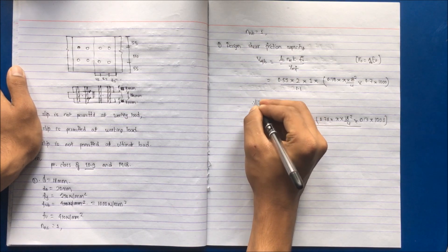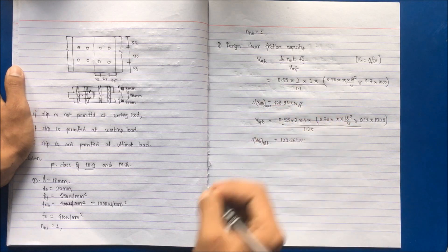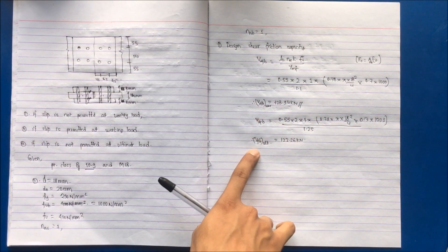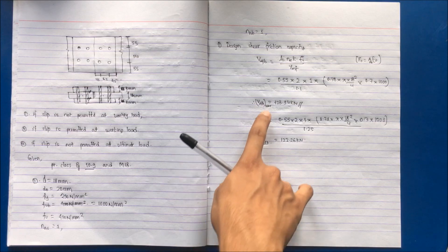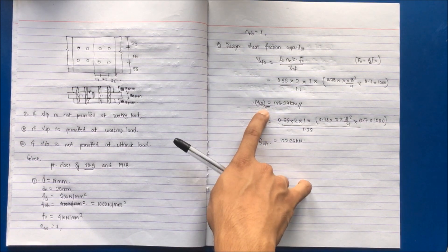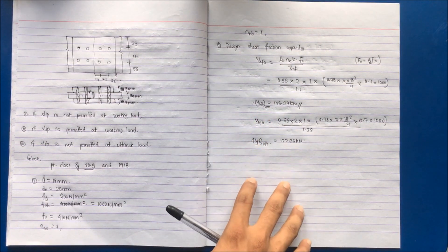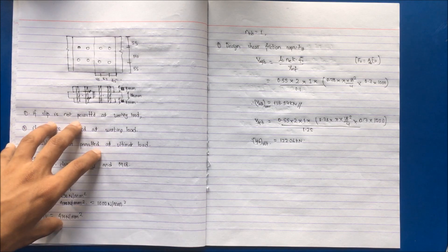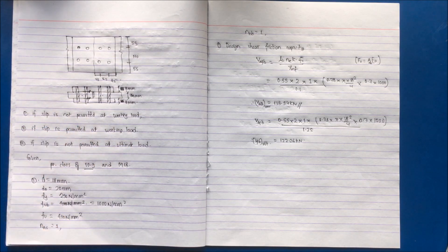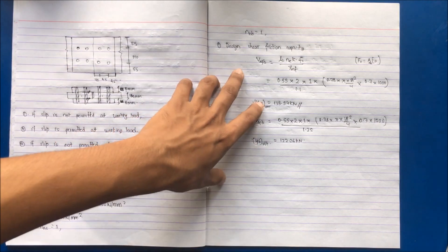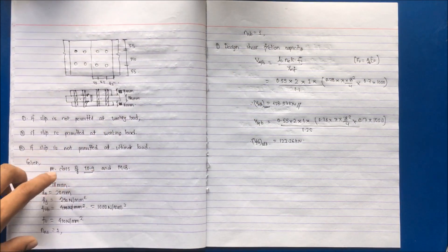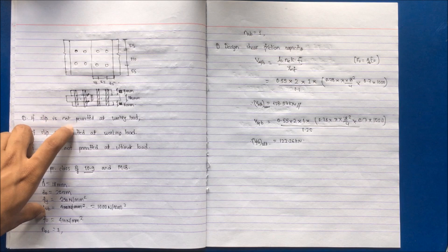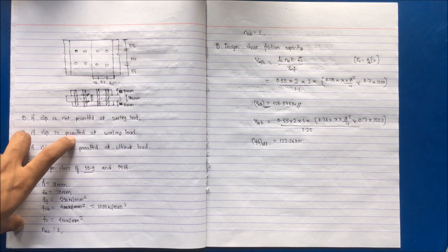The difference between working and ultimate load is that ultimate load is the factored load and working load is the unfactored load. The friction bolt works on slip resistance. Unlike the bearing bolt used in the previous example which is prone to slip, the friction bolt is not allowed to slip. Hence we consider whether slip is permitted at working load or not.